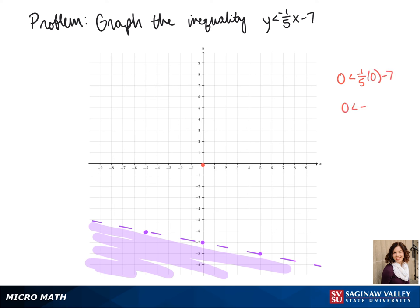So here I'm picking the origin. When I plug in 0 for both terms, this makes our inequality false, which means that I actually shaded in the correct side by shading in underneath the line.